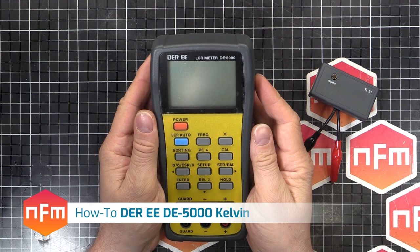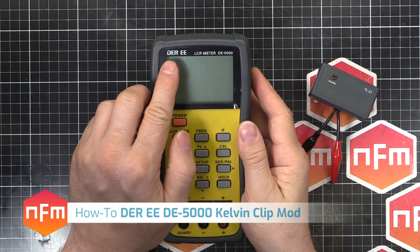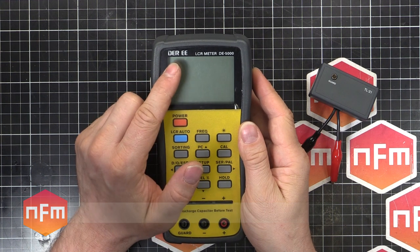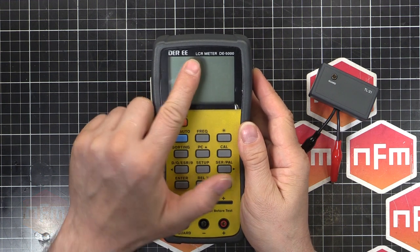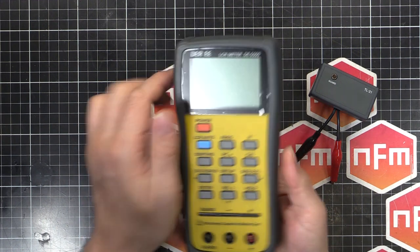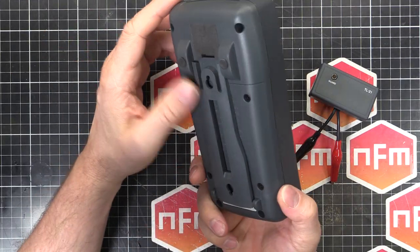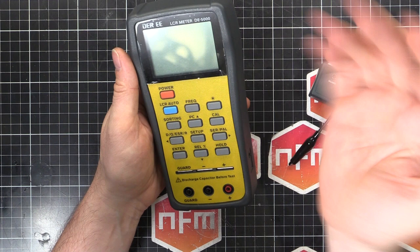Hey guys, got myself this LCR meter, it's a DER-E, D-E-R-E-E, I'm not sure how to say that, DER-E LCR meter, model number DE5000. It's a kind of common one for the low end, well, mid low end LCR meter.